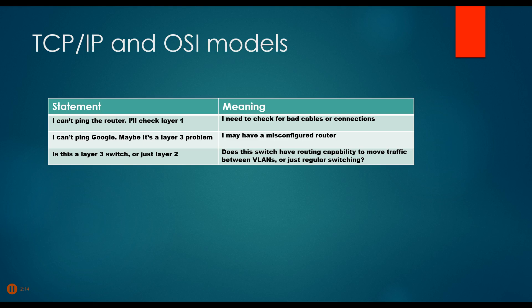Layer three means routers — maybe there's a misconfigured router somewhere. Or you might hear: 'Is this a layer three switch or a layer two switch?' — in other words, does the switch only deal with frames, or can it move traffic between VLANs, or virtual LANs, that we'll talk about later in the course? So we use those numbers all the time, and you need to get used to at least one, two, and three as common ones, and quite often four and seven. Very rarely do you hear about layers five and six.